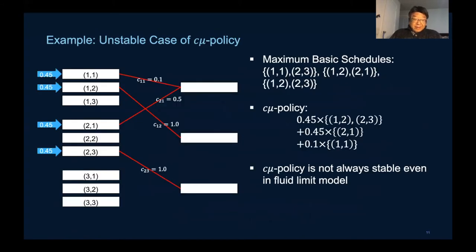As a specific example, here we have a three by three switch where the C-mu policy is actually not stable given the specific costs and arrival rates. For queues (1,1), (1,2), (2,1), and (2,3), the C-mu rule will concentrate on scheduling the ones with higher costs.